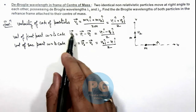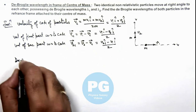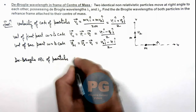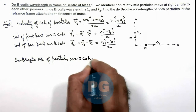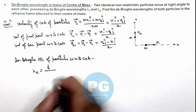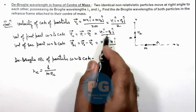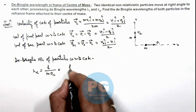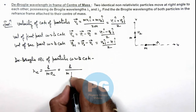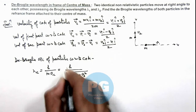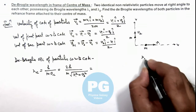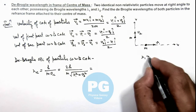Having obtained v1c and v2c, we now calculate the de Broglie wavelength of the particles with respect to the center of mass. Lambda of particle 1 with respect to center of mass is h divided by the momentum m*v1c. The magnitude of v1c is the square root of (v1² + v2²) / 2, giving lambda_1c = h divided by m times root of (v1² + v2²)/2. We can substitute v1 and v2 using lambda 1 = h/(m*v1) and lambda 2 = h/(m*v2).